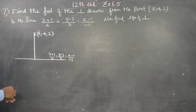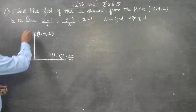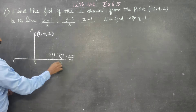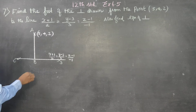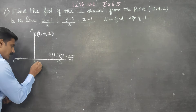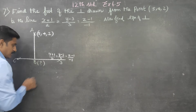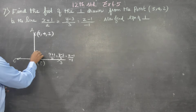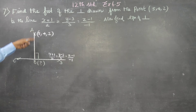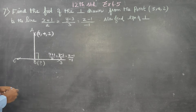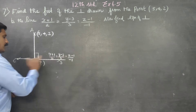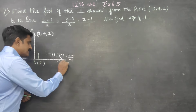In this line, AB is perpendicular to the line — this angle is 90 degrees. First, I have to find the point B, the foot of the perpendicular. In this line, I have to find the general point B.